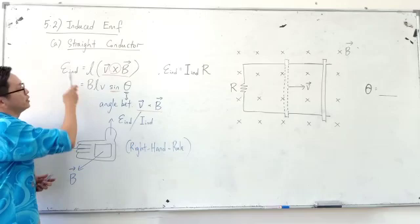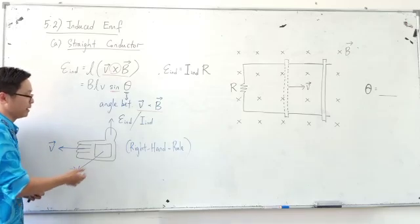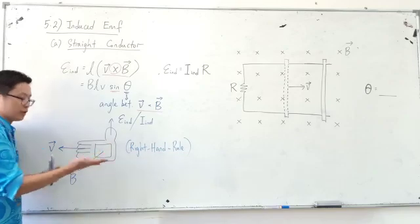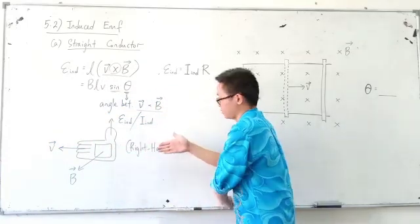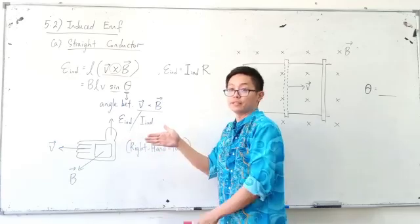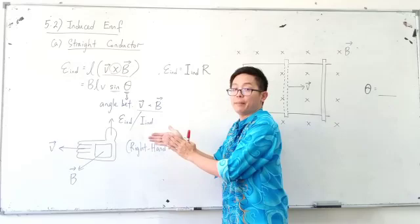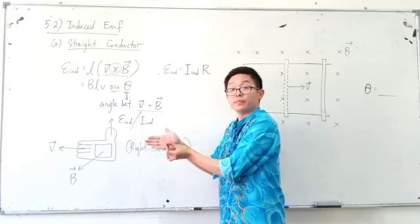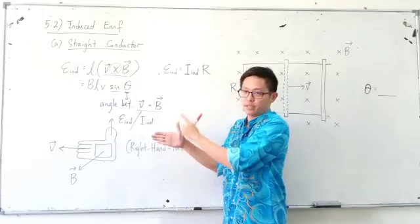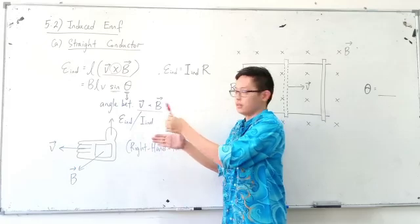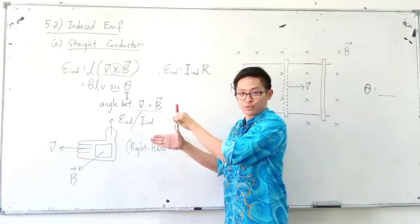To determine the direction of the induced EMF or induced current, we use the right hand rule — just like in chapter 4. The forefinger represents the velocity, and the thumb represents the magnetic field. In chapter 4, the thumb was for magnetic force, but now we change it to the induced EMF or induced current. So: forefinger = velocity, thumb = magnetic field, and the remaining finger gives the induced EMF or induced current direction.